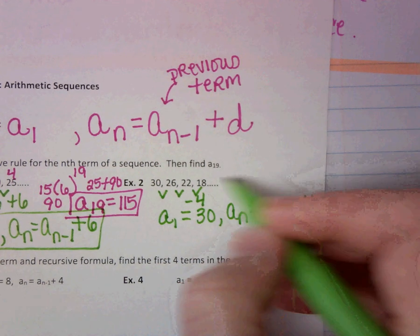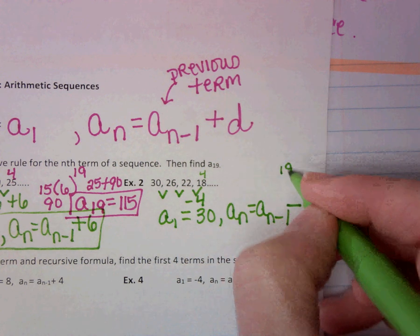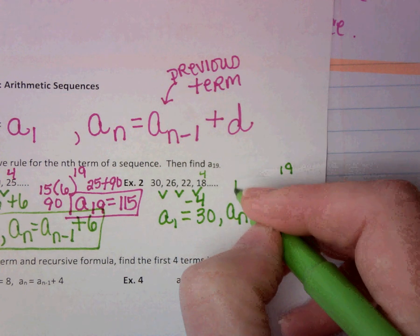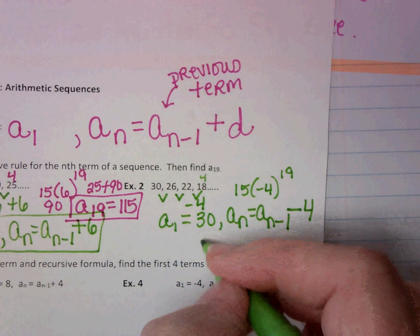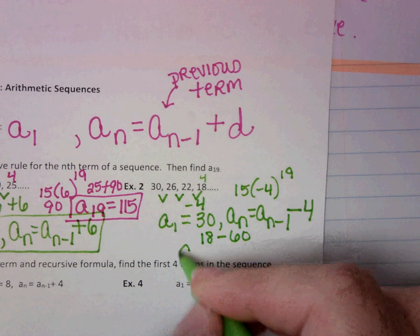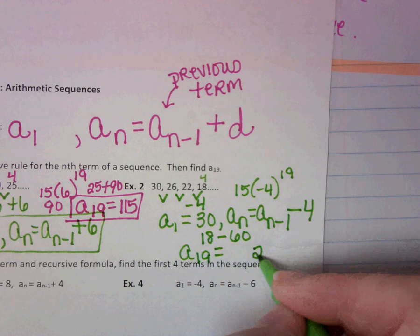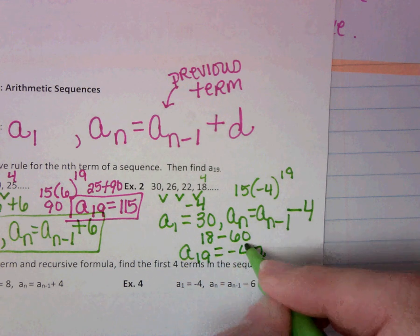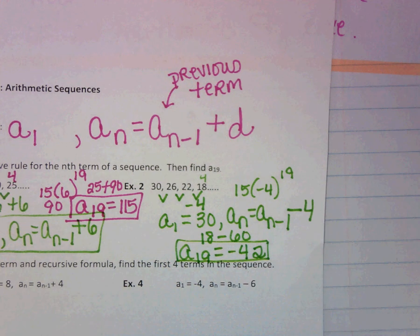We're trying to go to the 19th term. That's 15. 15 times negative 4 is negative 60. So what is 18 minus 60? That would be negative 42. a sub 19 would be negative 42.